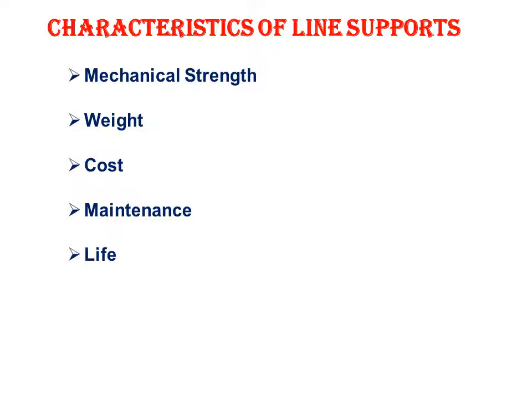Fifth is life. The life of the support must be very long. For example, a wooden pole lasts about 10 to 20 years, but a steel tower will have a much longer life. Sixth is accessibility — when we install insulators, conductors, and cross arms, any worker or technician should be easily able to access them for maintenance.